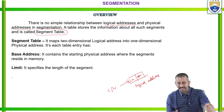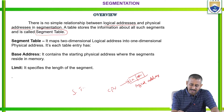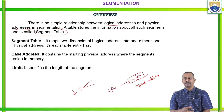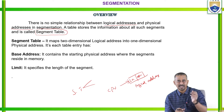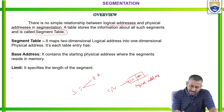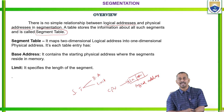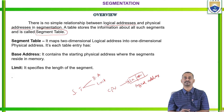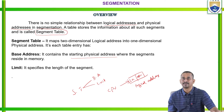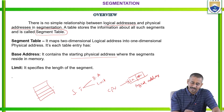In the case of segmentation, the segment table maps two-dimensional logical addresses into one-dimensional physical addresses. Each table entry has a base address and a limit. The base address contains the starting physical address where the segment resides in memory.